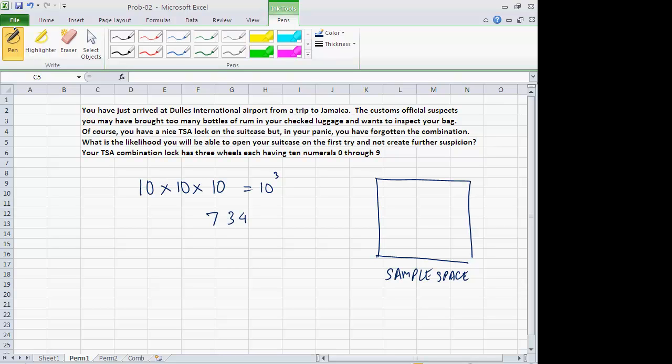When order matters, the counting rule that you use is called a permutation. In this specific case, you have permutation with repetition. What it means is the options that you have on one trial are also available on the second trial, and on the third trial and so forth.